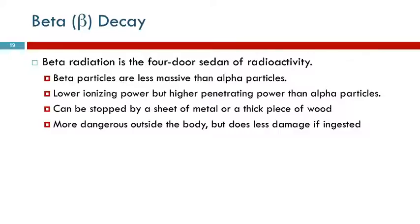Beta radiation is like the four-door sedan of radiation. They're less massive than the alpha particles, the semi-trucks. So they have lower ionizing power. They are more penetrating, though. A four-door car is easier to get through a traffic jam than an 18-wheeler. It can penetrate the traffic jam. But when it runs into something, it doesn't do as much damage. Beta particles are more dangerous in the atmosphere because they can get through your skin. They can go through your skin, they can go through your clothing. But when they do get inside, they're not as dangerous as the alpha particles were because they don't ionize as much. They can be stopped by a sheet of metal or even a thick piece of wood.